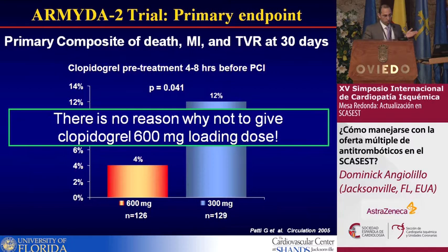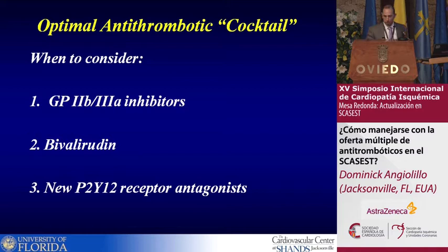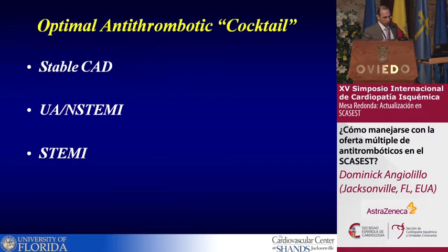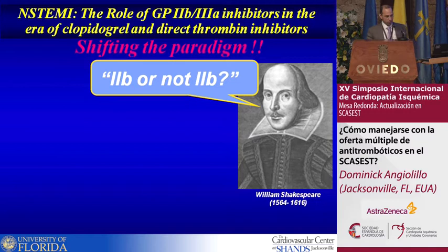So our starting point is: in ACS patients and patients undergoing PCI, there's no reason not to give a 600 milligram clopidogrel loading dose together with aspirin and heparin. The practical questions for this talk are: when do we consider 2B3A inhibitors, when do we consider bivalirudin, and when do we consider the new P2Y12 receptor antagonists? I've been asked to speak only about unstable angina and non-STEMI, so we'll focus on this cohort.